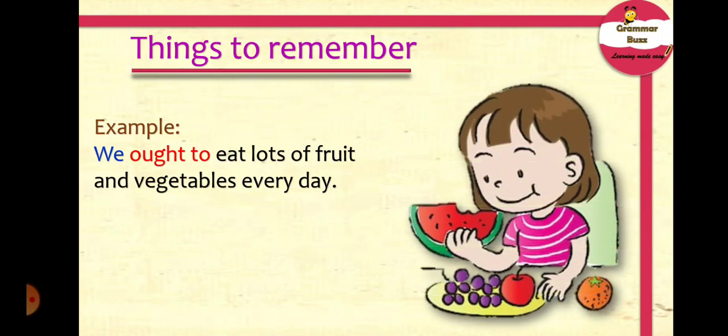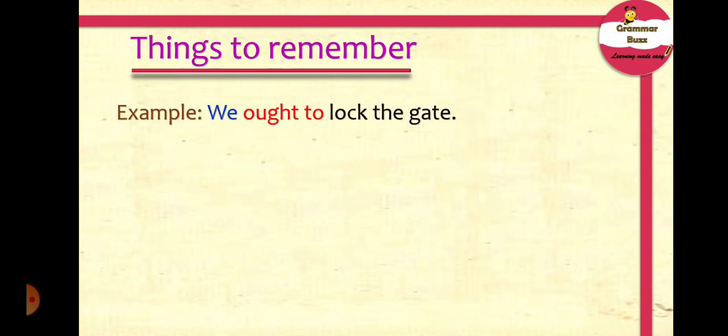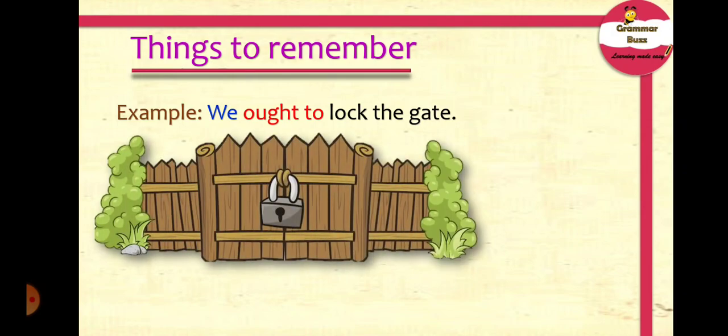Example: 'We ought to eat lots of fruit and vegetables every day.' After removing 'we ought to,' the sentence changes to 'Eat lots of fruit and vegetables every day.' Another example: 'We ought to lock the gate.' Here again, we drop the subject 'we' and remove 'ought to,' and the sentence changes to 'Lock the gate.'